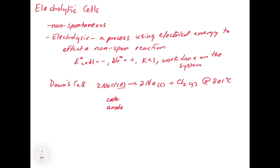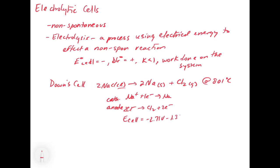The cathode reaction is Na⁺ + 1e⁻ → Na, and the anode reaction is 2Cl⁻ → Cl₂(g) + 2e⁻. If you calculate the E_cell, that's going to be −2.71 volts, which is very non-spontaneous, minus 1.36 volts, giving a grand total of −4.07 volts.